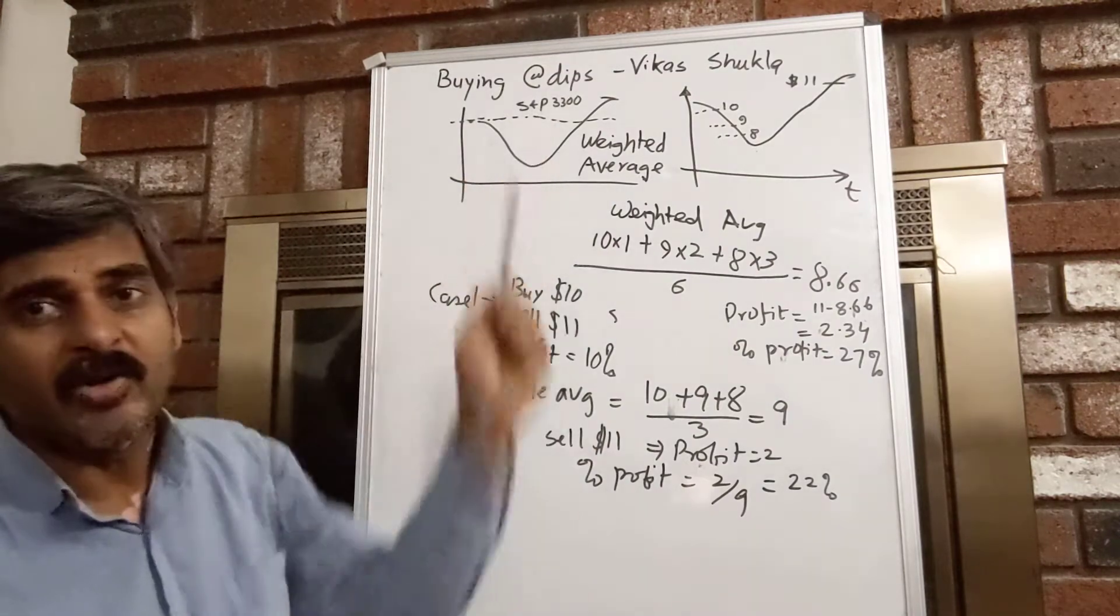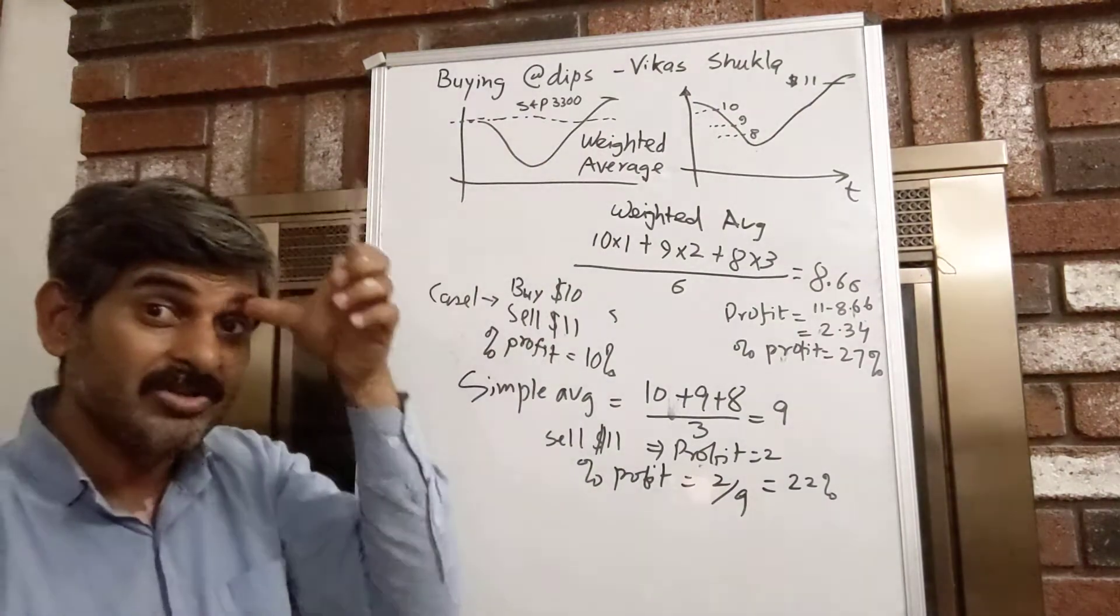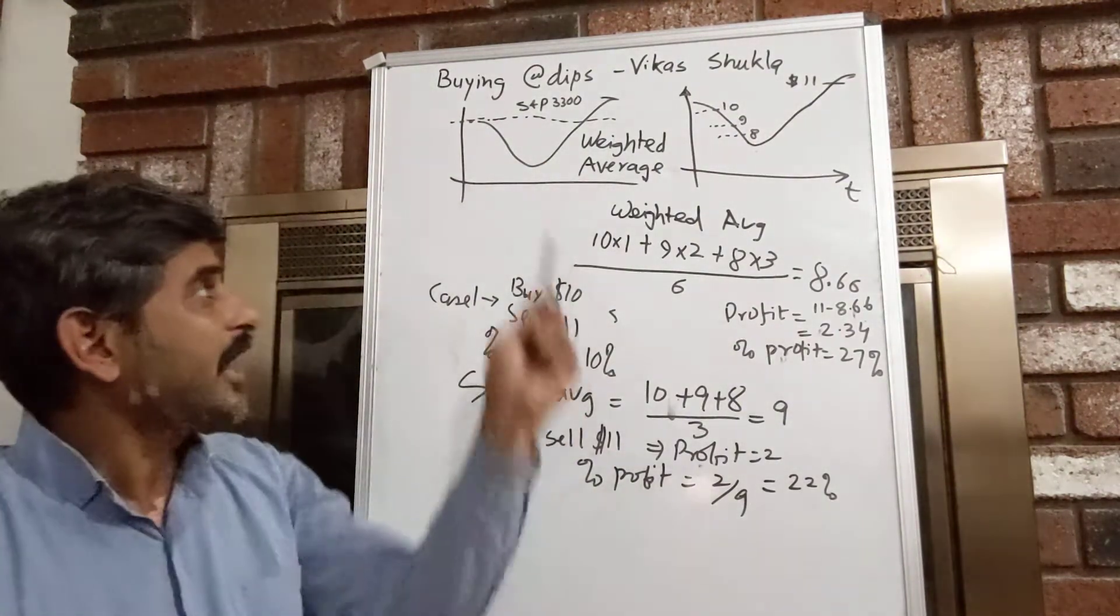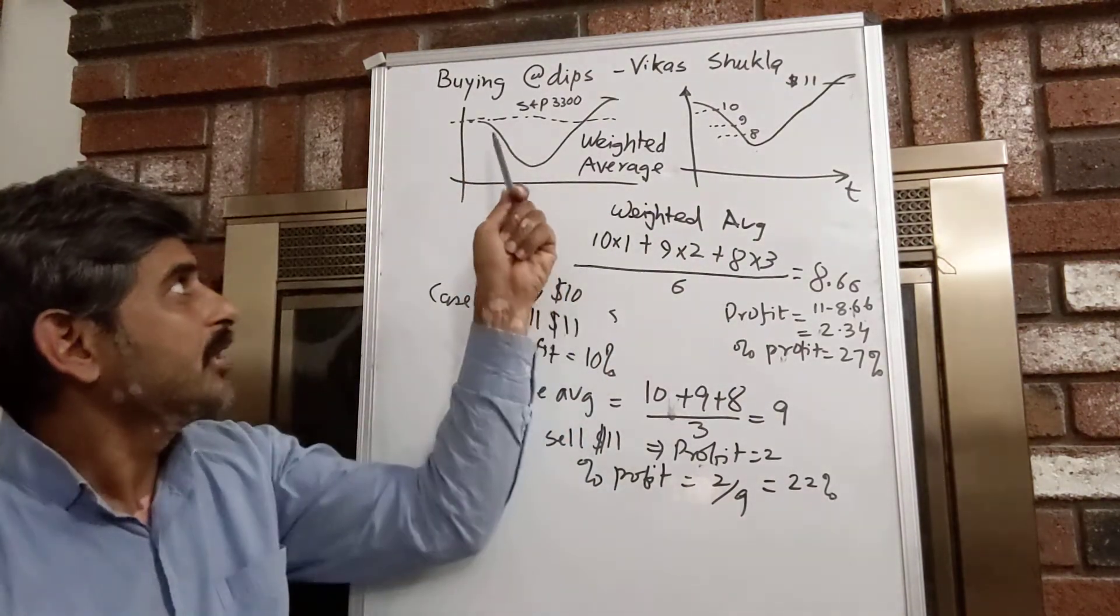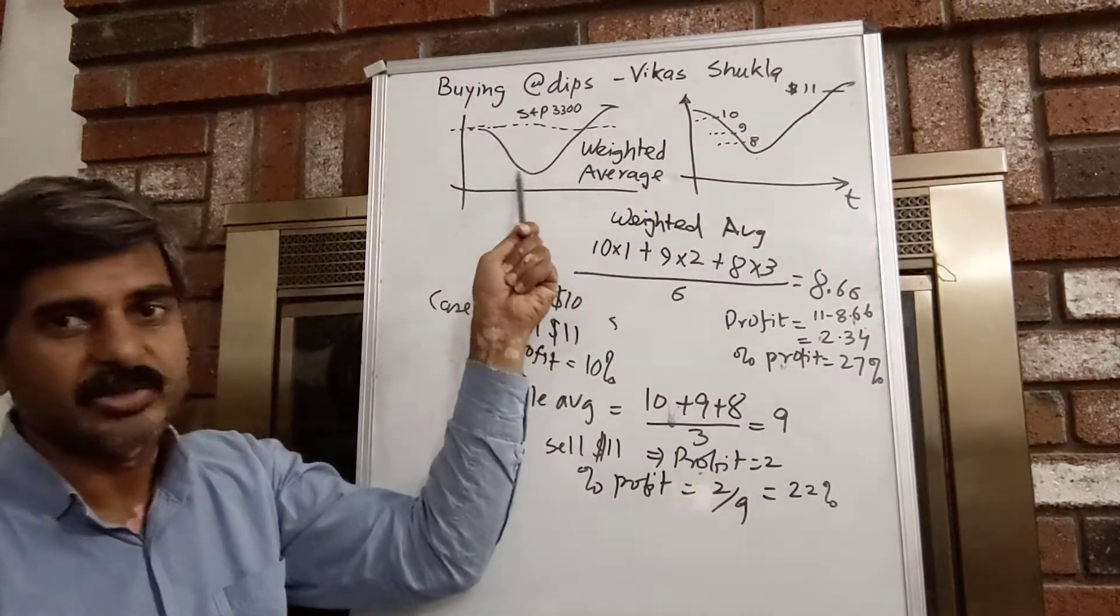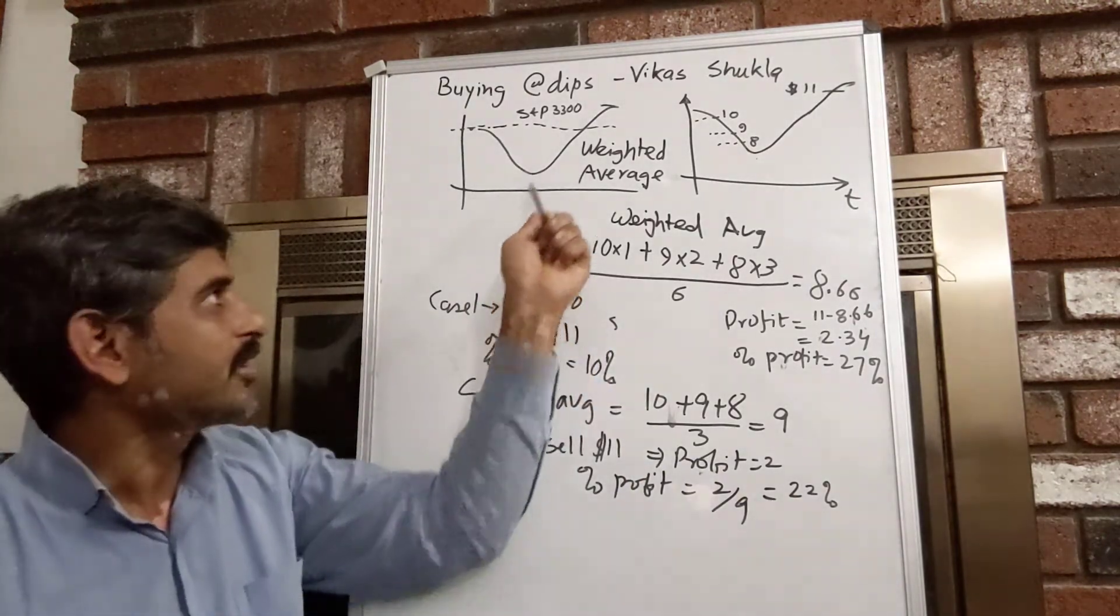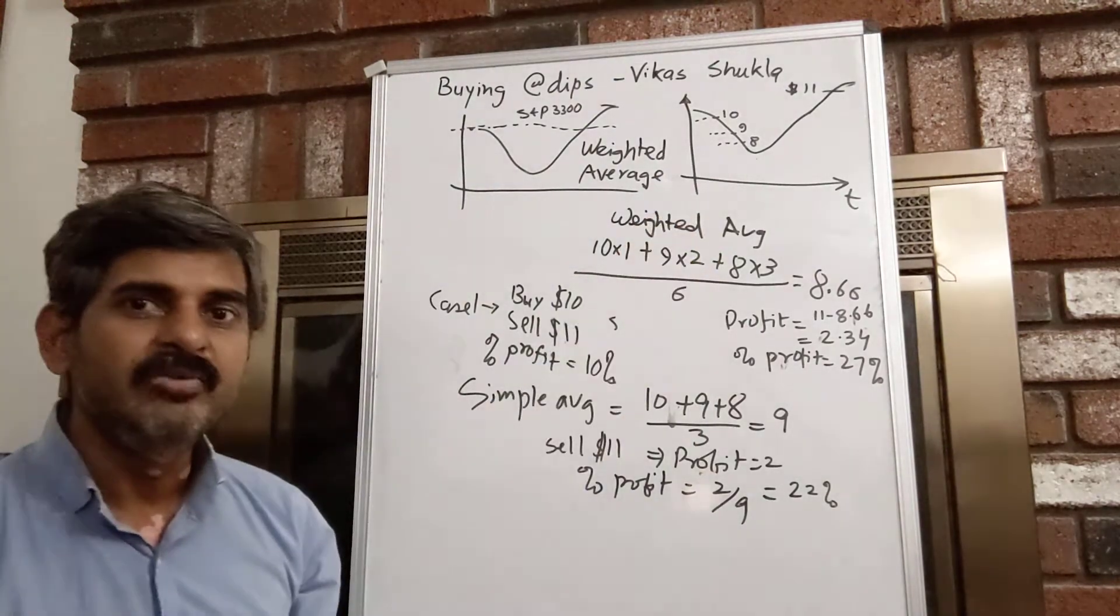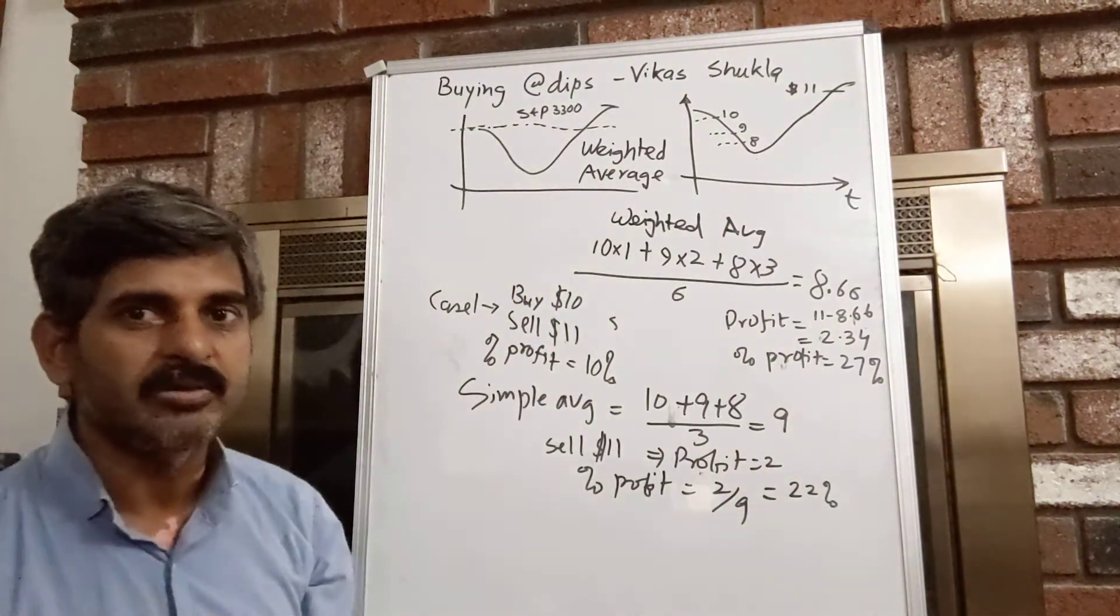So the concept is this: let's say that currently our S&P today is about almost all time high at 3300. And it's possible that this stock market can go down, maybe from 3300 could go down to 3000, 2700 and let's say 2400. We will not cover the case where it goes below 30%.